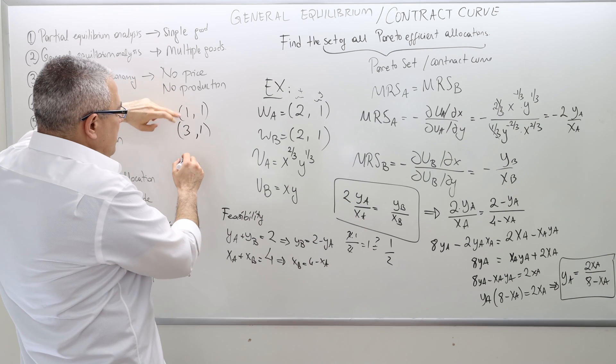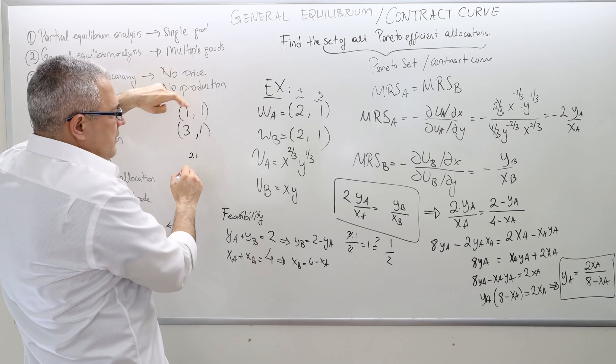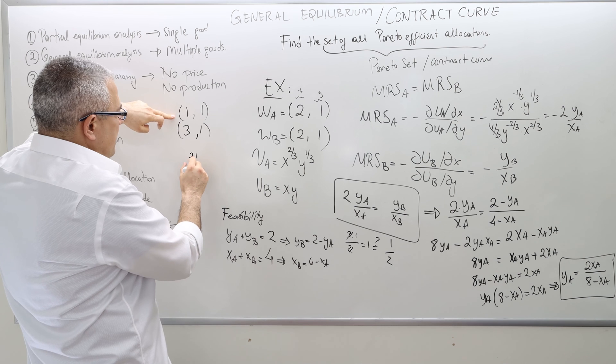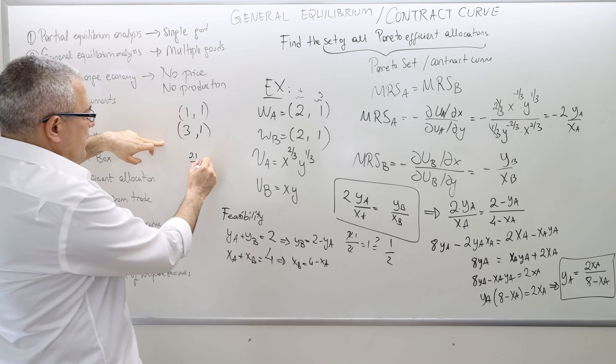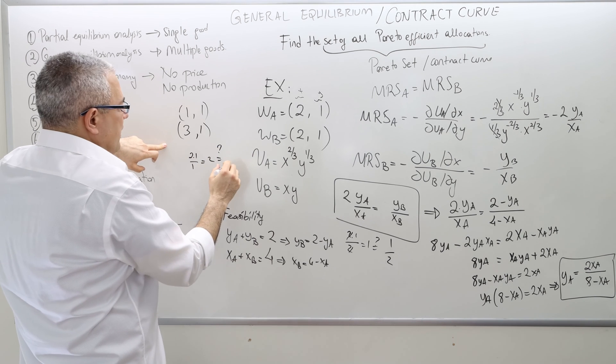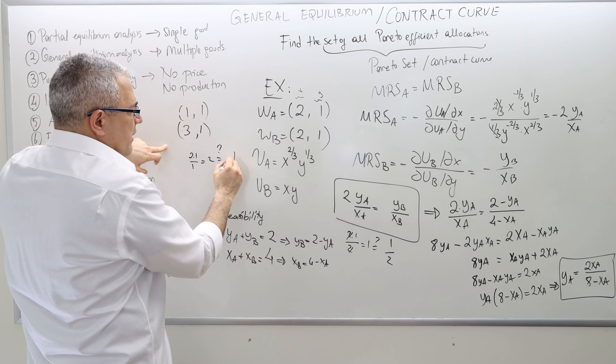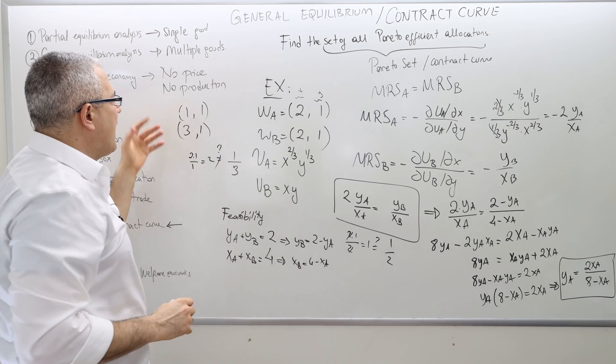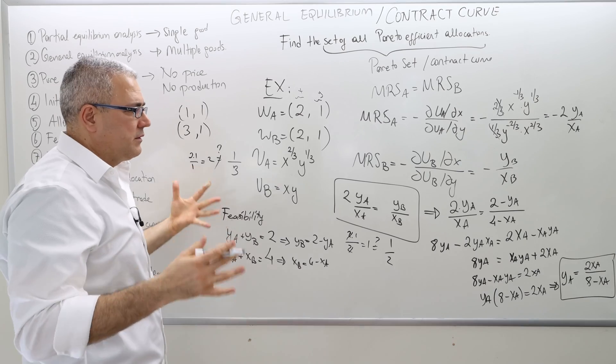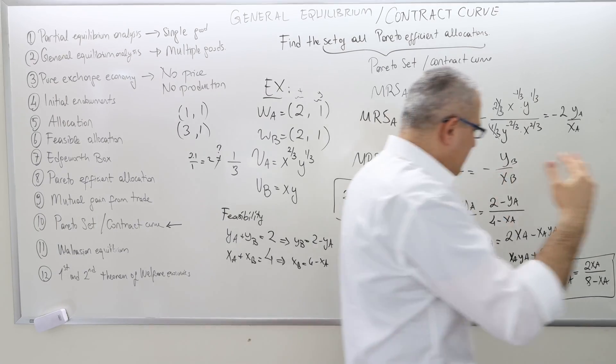So 2 times y_A, so it's 2 times 1 divided by x_A, which is 1. Therefore, it's 2. Is this equal to y_B divided by x_B? y_B is 1, x_B is 3. So 2 is not equal to 1/3. Hence, this is also not Pareto-efficient.